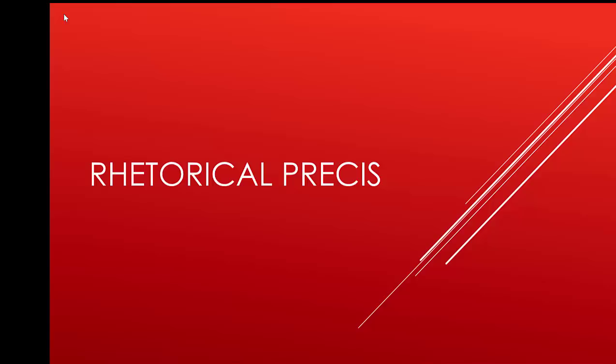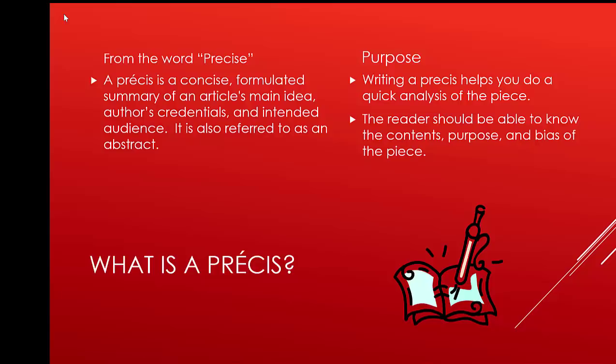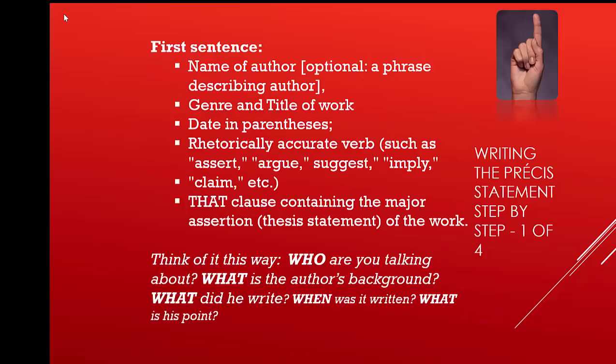We get the word precis from the word precise. What we do is we talk about not only the article's main idea, but we talk about who the author is, who they're writing to, and how they're writing to that person. Its purpose is to help you do a quick analysis of a piece, so the reader should be able to know the contents, purpose, and if there's any particular bias on the writer's part. It consists of four sentences, and each sentence is specifically formulated to do a different function.